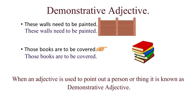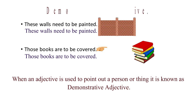We see that when a word is pointing towards a person or thing, it is known as a demonstrative adjective. As in the examples, 'these' and 'those' are demonstrative adjectives, as they are pointing towards particular things.